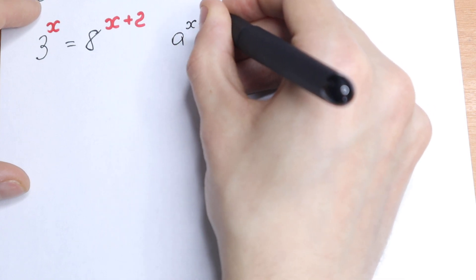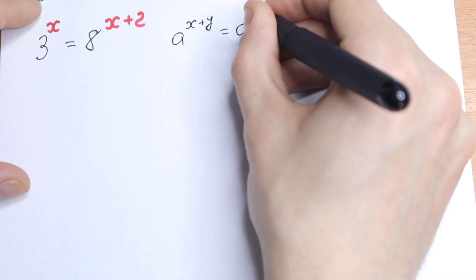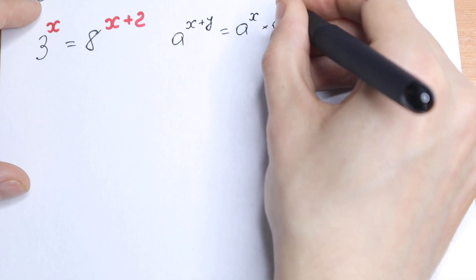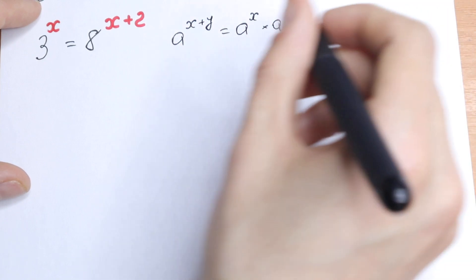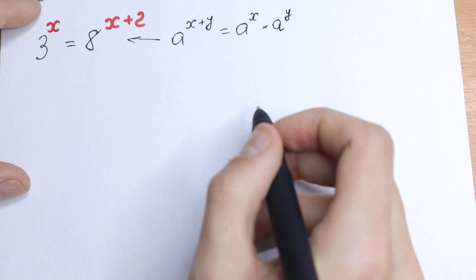a to the power x plus y equal to a to the power x times a to the power y. This is a really good rule because we can easily use this rule right here on the right.